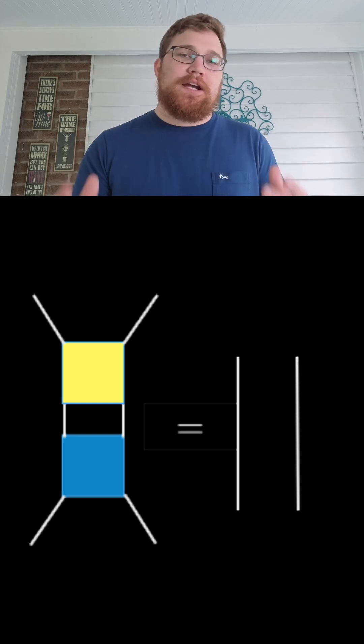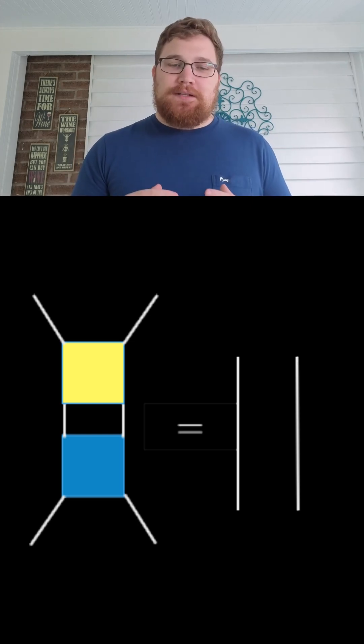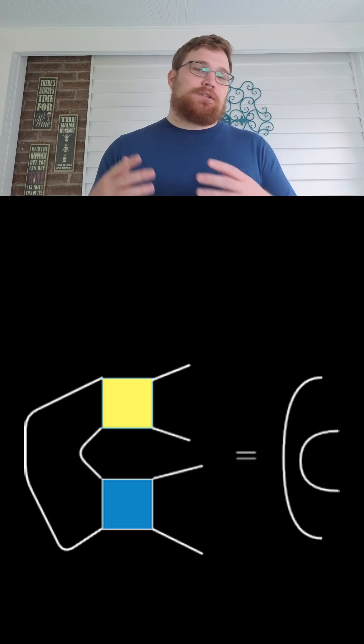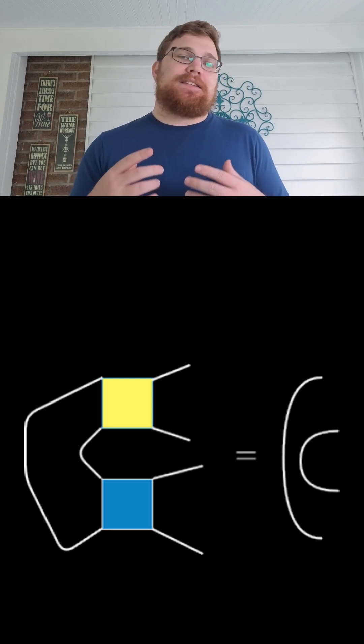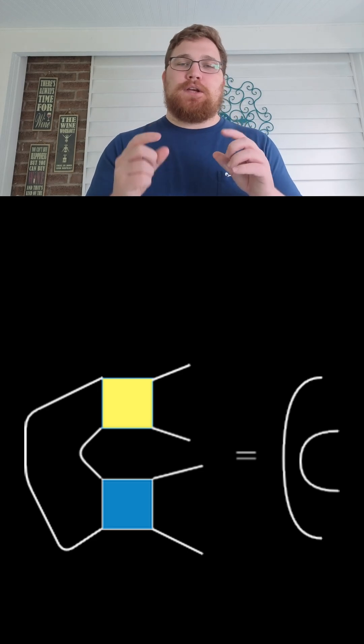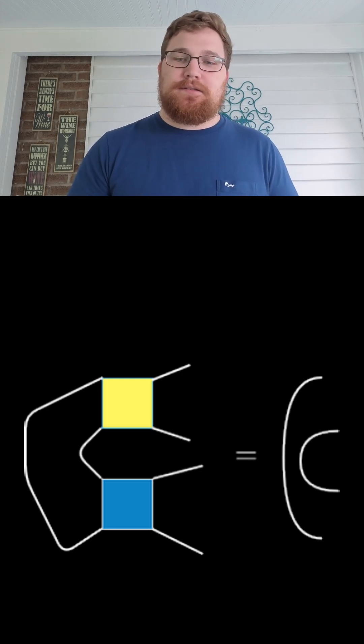So what does dual unitarity mean? Dual unitarity demands that the gate is not only unitary in the time direction, but it is unitary in the space direction as well. This is pictured like so, connecting the gates in a space-like fashion. Instead of getting two vertical lines, we get these two new identity lines.